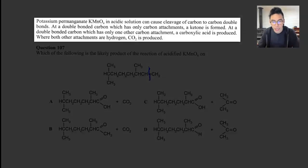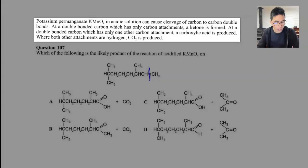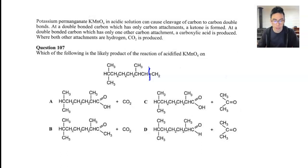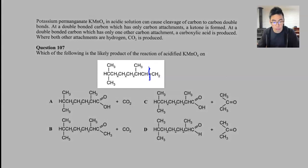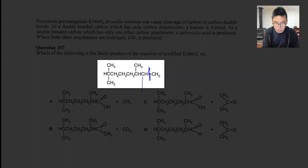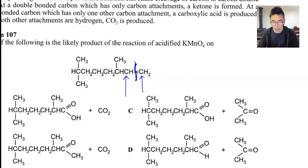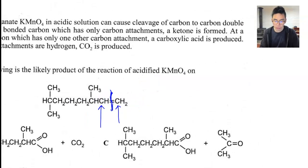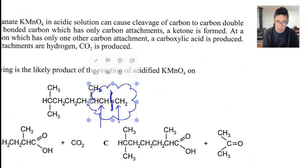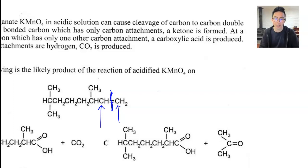Continuing on: at a double bonded carbon which has only carbon attachments, a ketone is formed. Let's stop and consider what this means. A double bonded carbon refers to either of the two carbons involved in the double bond in our diagram. I'm going to zoom in a little and hone in on the important area of the molecule around that double bond, because we need to know what is actually attached to each of those carbons.